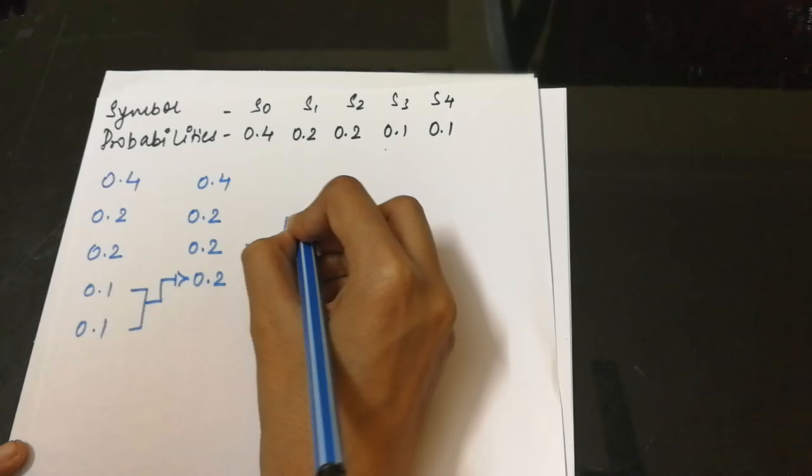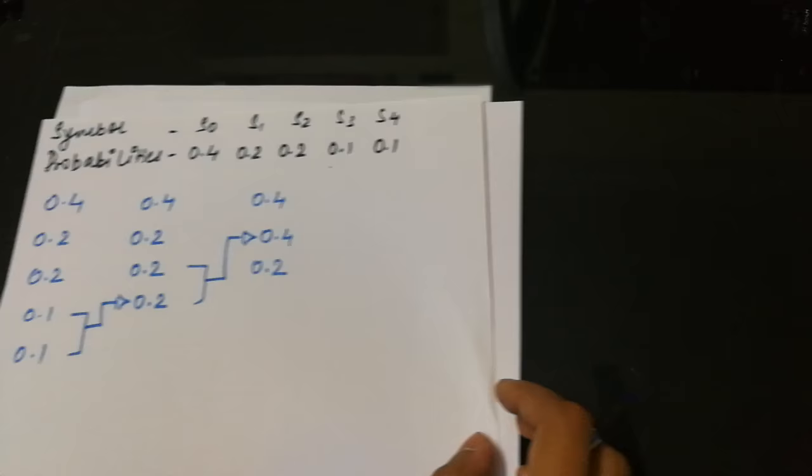Now on adding these two we get 0.6, which is greater than 0.4, so we write it above 0.4. Now we stop here.